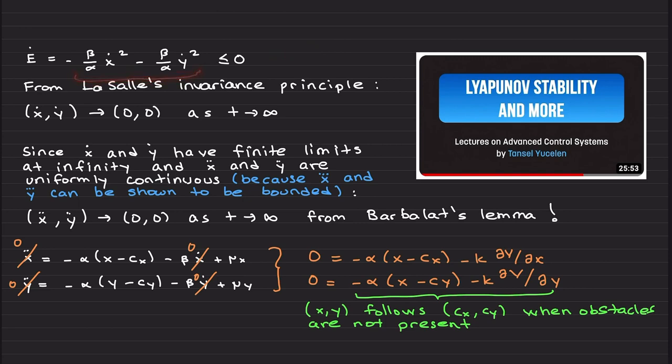As t goes to infinity, since ẋ and ẏ have finite limits at infinity and ẍ and ÿ are uniformly continuous—I didn't show here that ẍ and ÿ are uniformly continuous because it is really straightforward.